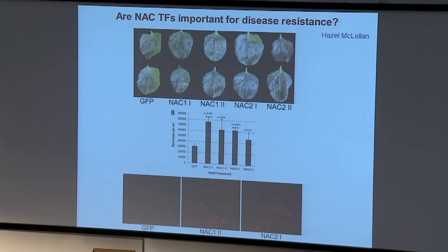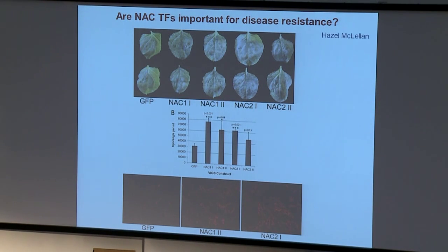The next thing to do is investigate whether NTP1 and NTP2 are really important to defense. To do that, we've silenced them using virus-induced gene silencing with two different silencing constructs for each. In each case, after 10 days following Phytophthora inoculation, we see much stronger colonization and sporulation of the pathogen on silenced plants compared to unsilenced leaves — nearly a doubling in spore numbers. If we look early on in infection during the biotrophic colonization phase, we also see much more rapid colonization on silenced plants.